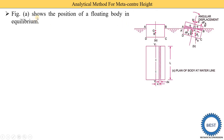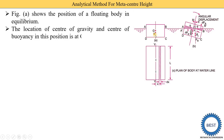What does figure A indicate? Figure A shows the position of a floating body in equilibrium. This rectangle is our floating body, and in it, two points are mentioned: one is the G point and the second is the B point. G means the location of the center of gravity, and B means the center of buoyancy. At the G point, the weight of the body is located, and at point B, the buoyant force F is acting.